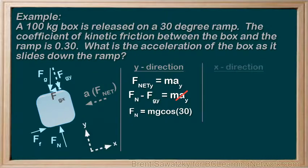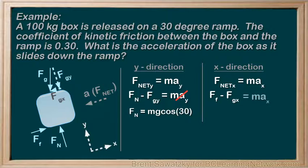Let's switch to the X direction. Again, Fnet,X equals MAX. The forces in the X direction include the force of friction going up the ramp, positive. And Fg,X going down the ramp, negative. And on the right, we are expecting an acceleration in the X direction. So, we'll leave the MAX in place. So, mu Fn minus Fg sin 30 equals MAX.